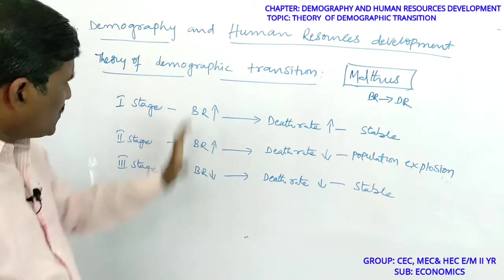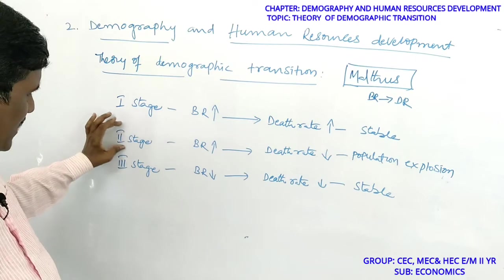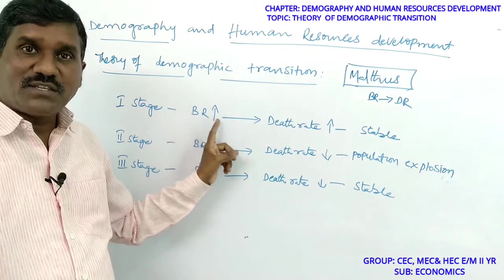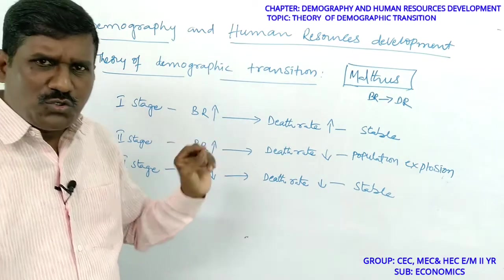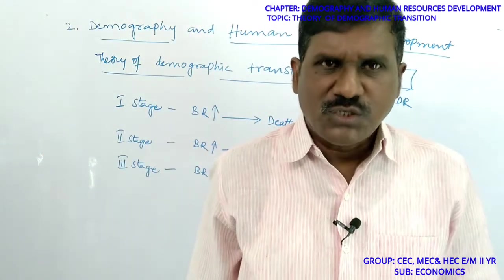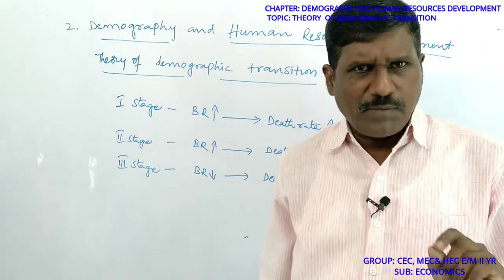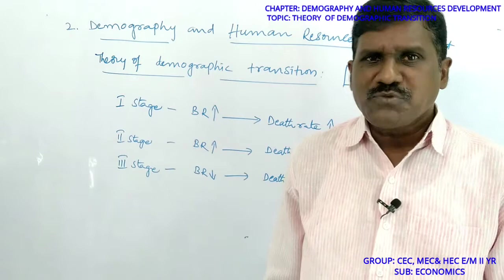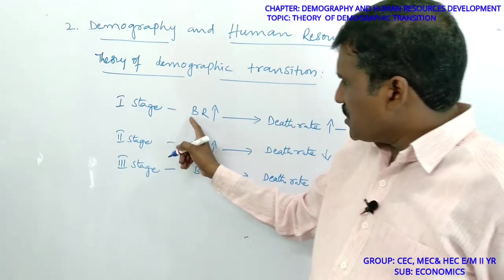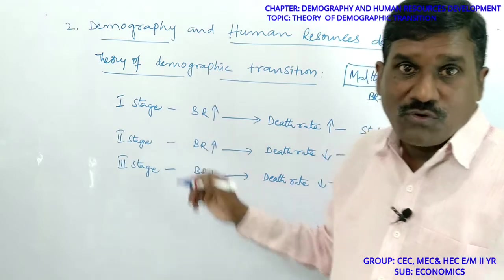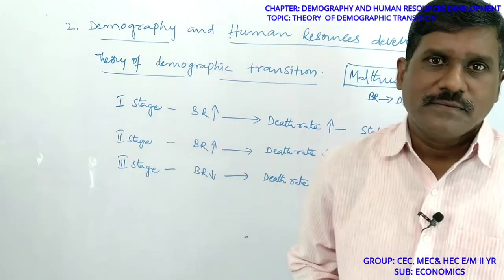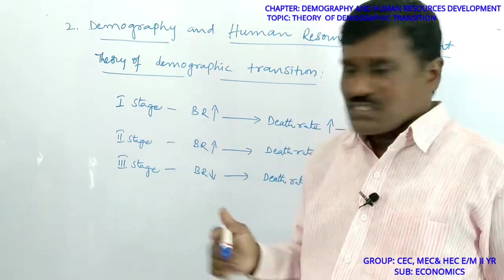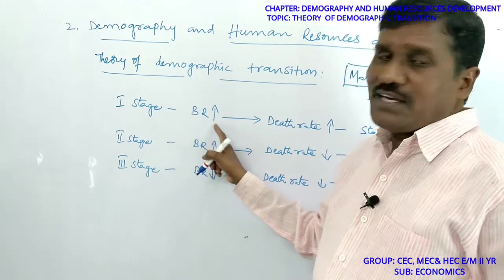In the first stage, there is a high birth rate. Why? Due to lack of literacy, lack of awareness about family planning, and most people are following old beliefs. In the initial stage, people have no knowledge about small family norms or family planning operations, so birth rate is very high.